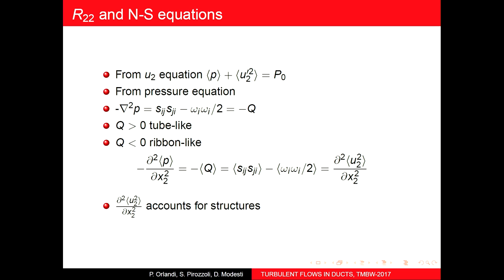Why is v-prime interesting? Because turbulence is characterized by structures. Ribbon-like structures are associated with the strain rate tensor S_ij, while rod-type structures are more associated with omega-squared. The relevant quantity accounting for structures is therefore related to which of these dominates.